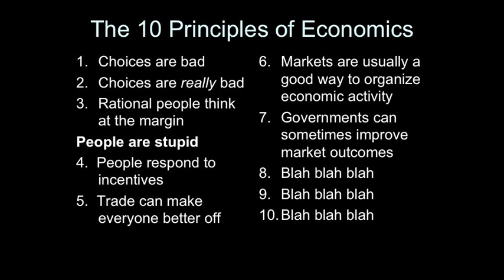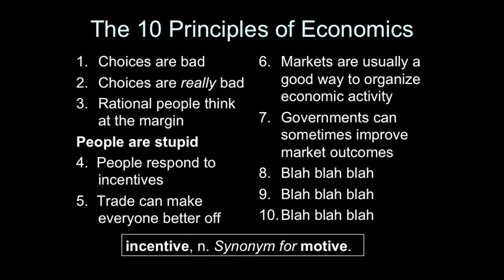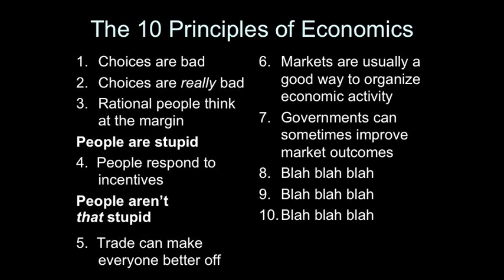But before you despair for humanity, take a look at the next principle: people respond to incentives. Now, the dictionary says that incentive is a noun and that it's a synonym for motive. So when Mankiw says that people respond to incentives, what he's saying is that people are motivated by motives. You might think this is a bit like saying that tautologies are tautological. People would have to be pretty stupid to be unmotivated by motives. But remember principle three — people are stupid. Hence the need for principle four to tell us that people aren't that stupid.